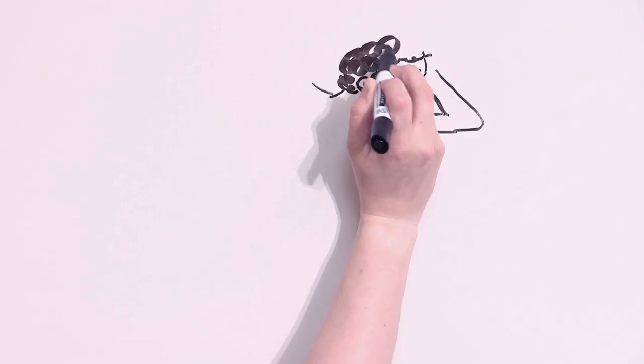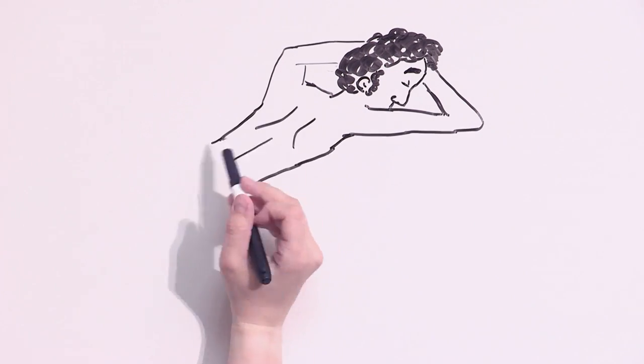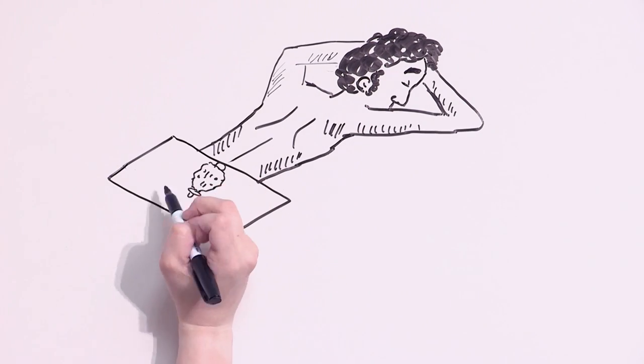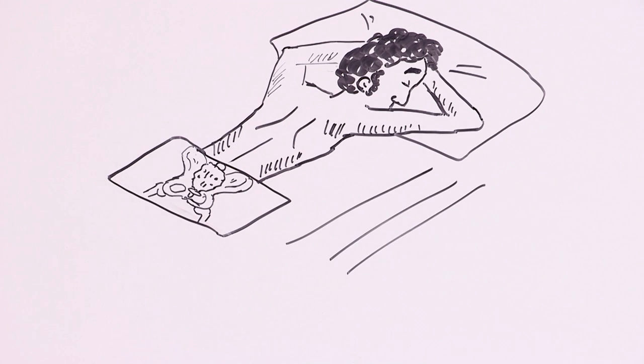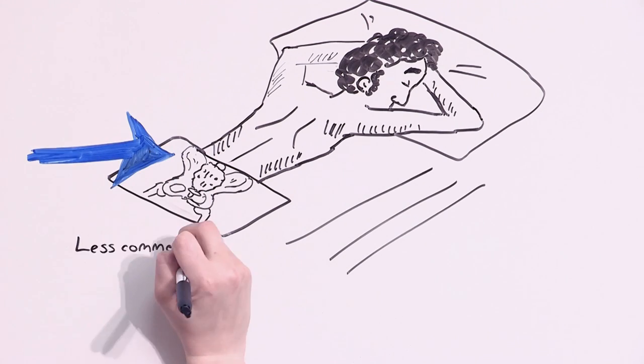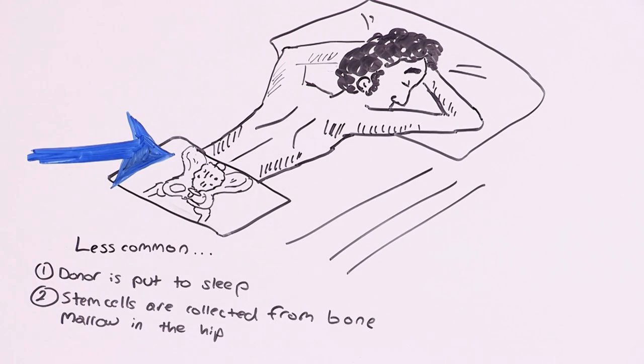The other, less common way that stem cells are collected is directly from bone marrow. Here, the donor is given anesthetic to make them sleep. And then, stem cells are collected from the bone marrow in their hip.